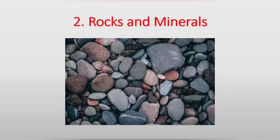There are eight planets in our solar system and those planets are Mercury, Venus, Earth, Mars, Jupiter, Saturn, Uranus, and Neptune. But there is life only on Earth. So when we talk about Earth, we see the soil and the rocks on the Earth. And here is a picture of some rocks.